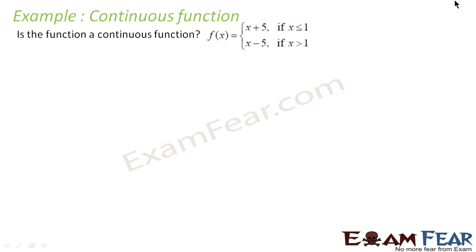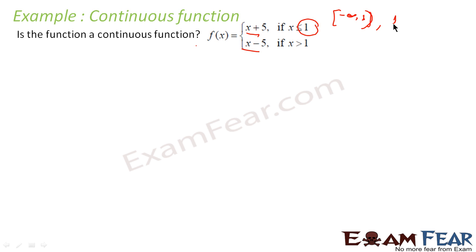Let's take one more example. Here we also have to tell whether the function defined is continuous or not. The point of contention is x=1 because at x=1 the function changes. So we divide the domain into three buckets: minus infinity to 1 (not included), x=1, and then 1 to infinity.